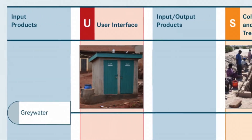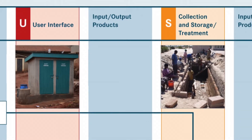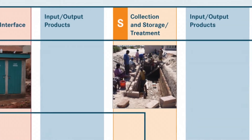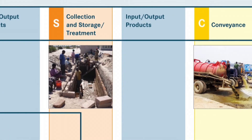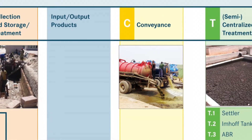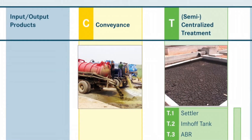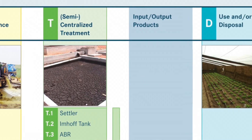The course includes both theoretical knowledge and practical case studies featuring context-specific sanitation solutions. At the end of this course, you will have a clear understanding about the sanitation systems approach, how different technologies along the sanitation chain are linked to each other, like the one shown here — between a toilet, the collection and storage, the transport and conveyance of the sludge, the treatment, and finally, the use and/or disposal.